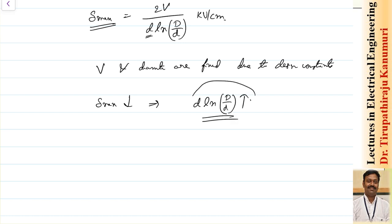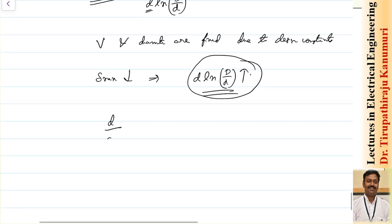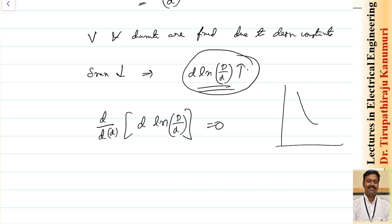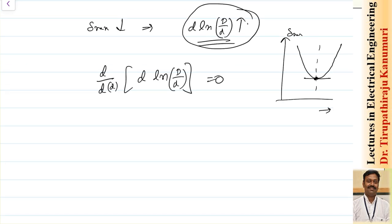Differentiating d · ln(D/d) with respect to d and setting it to zero: d · [d/D · (−D/d²)] + ln(D/d) = 0, which gives −1 + ln(D/d) = 0. Therefore ln(D/d) = 1, or D/d = e = 2.718. This is the condition for the most economical conductor size.